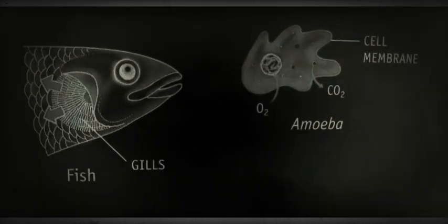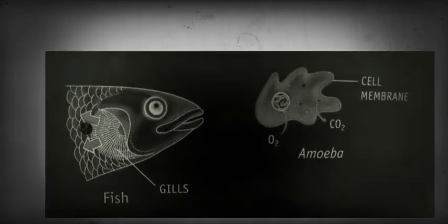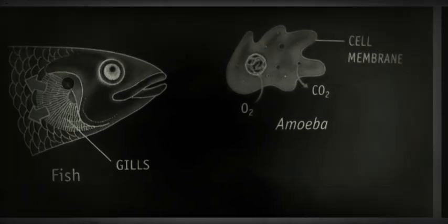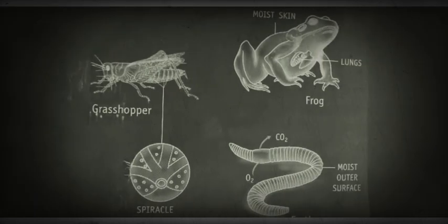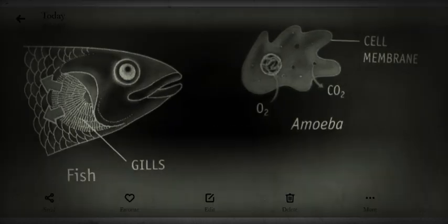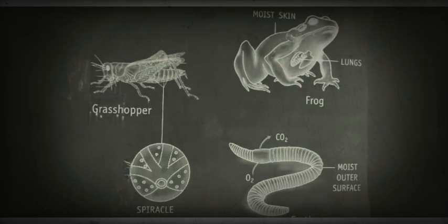A tadpole has gills. You can see it, this is like a tadpole. But when it grows, when the frog develops, airbags develop which is called lungs for gaseous exchange.